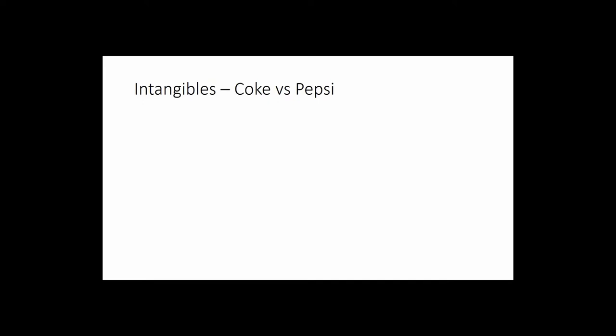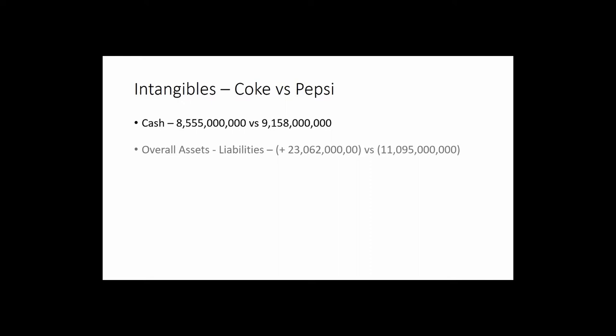Now we've got to look at the intangibles — probably the most important part. These are the things that can't be fudged or manipulated; they really give us a fundamentally good standing. Coke versus Pepsi — how much cash are they actually sitting on? Coke has $8.5 billion versus Pepsi's $9.1 billion. Both companies have a ton of cash to work with. That levered free cash flow is their cash flow after all expenses; the cash figure here is just money sitting there — the rainy day fund.